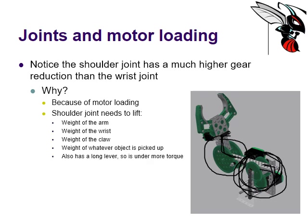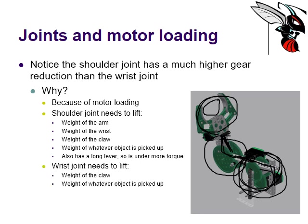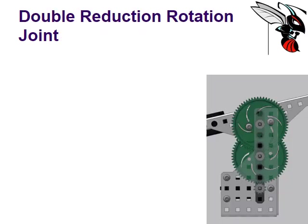The shoulder joint has to lift the weight of the entire arm — the wrist, the claw, and whatever is being picked up — and it's on a long lever, so more torque is required. The wrist joint only has to raise the claw and its load, and it's not a very long lever. Because of these varying degrees of load, whoever built this system compensated by creating a much higher gear reduction where necessary.